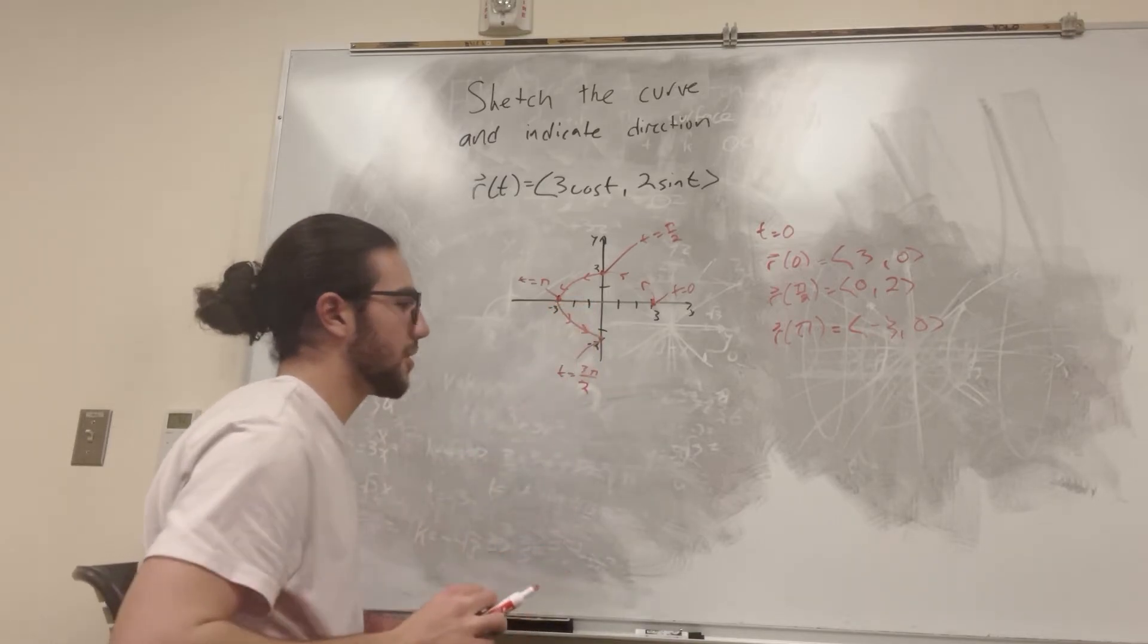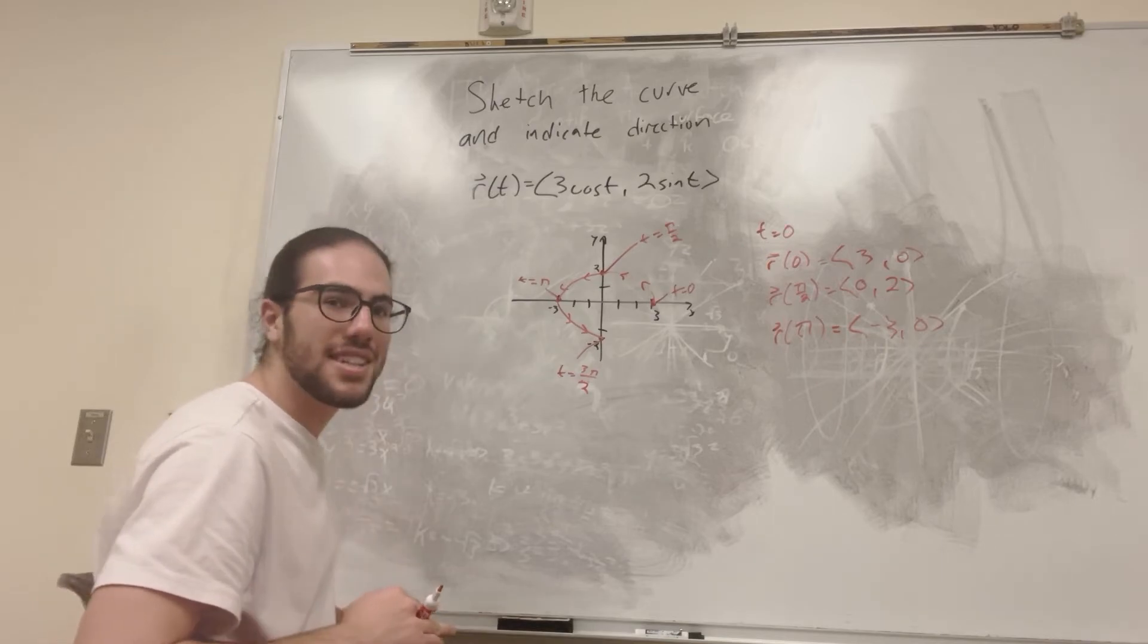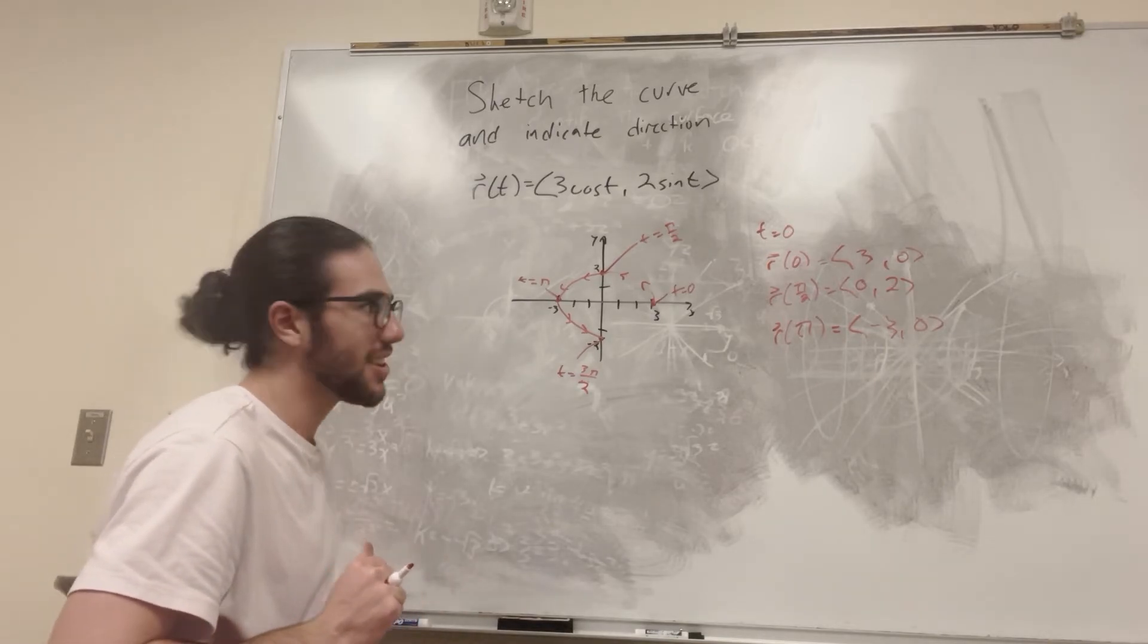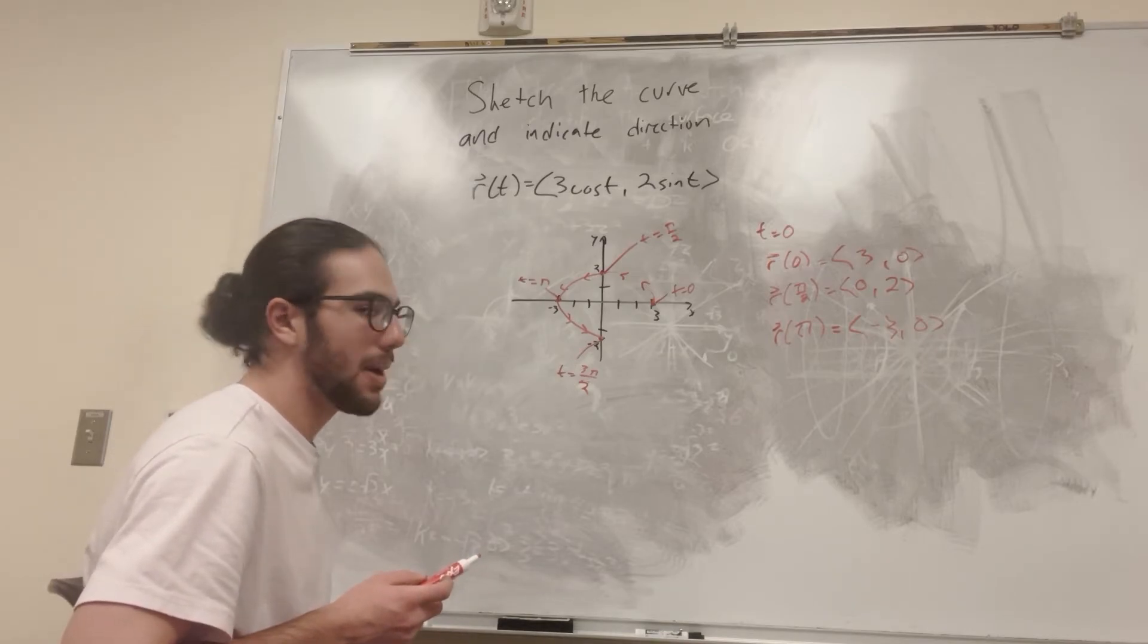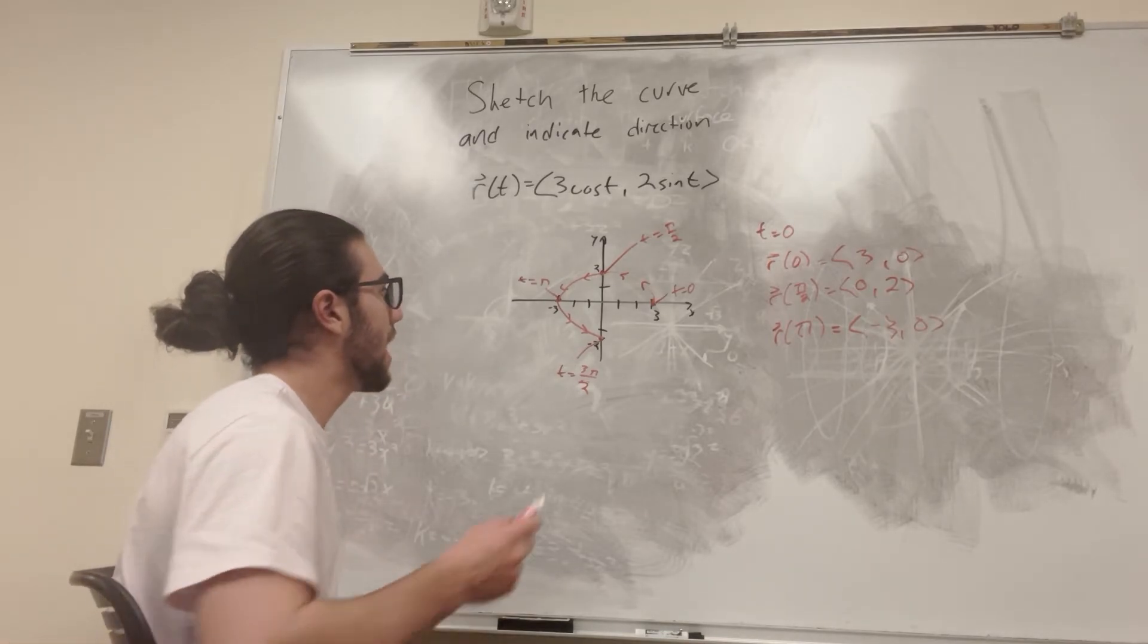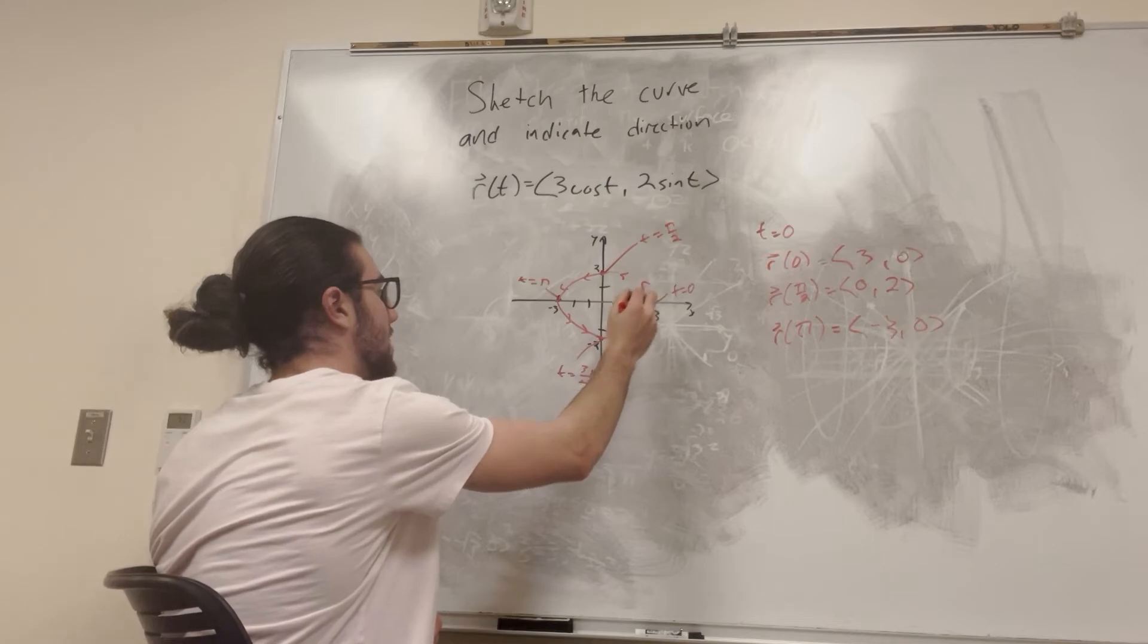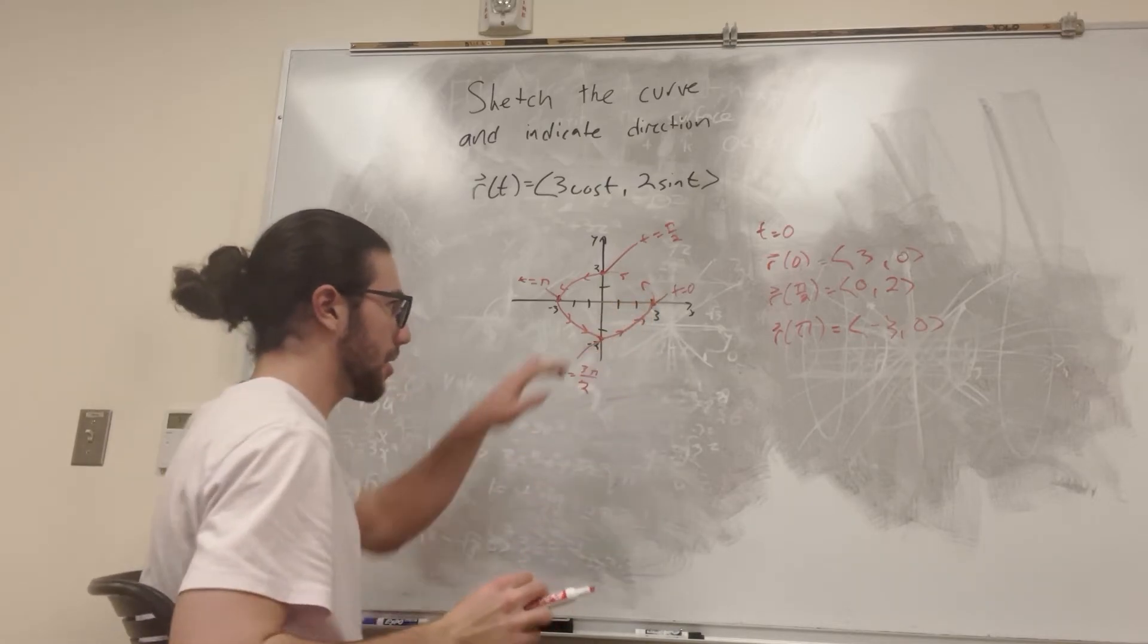And you can even do intermediate values if you want. Like, for instance, if you used every single value of t, like doing an integral or something, you'd just eventually end up with this curve. So then we go back to pi. Let's go back to 2 pi. 2 pi is going to give us all the way back to here, obviously. And it's going to keep translating the slope.